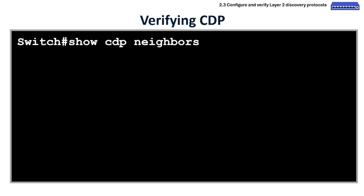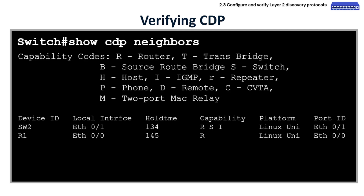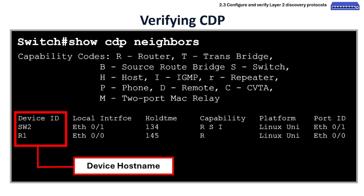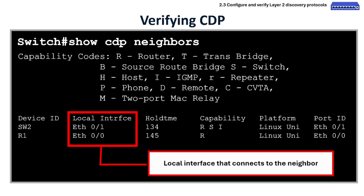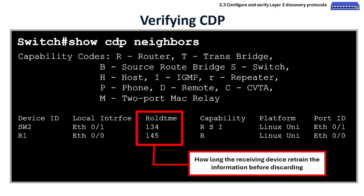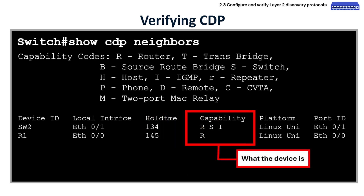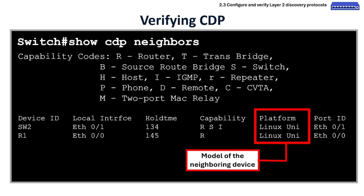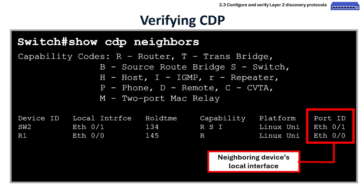For verifying CDP, we check the CDP table using the show cdp neighbors command. The first column, device ID, shows the device's hostname. The second column, local interface, shows switch1's local interface that connects to the neighbor — for example, switch1's interface ethernet 0/1 connects to router1, while ethernet 0/0 connects to router1. The hold time value indicates how long a receiving device should retain the information before discarding it if no further updates are received. The capability column shows if the device is a router, switch, or IP phone. The platform identifies the specific model of the neighboring device — since our devices are virtual IOL images, it shows Linux. The port ID shows the neighboring device's local interface.